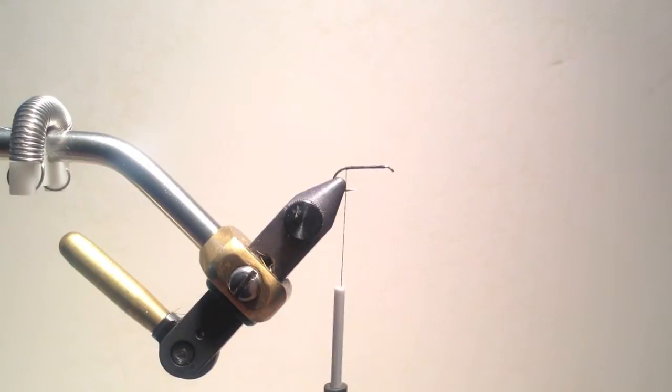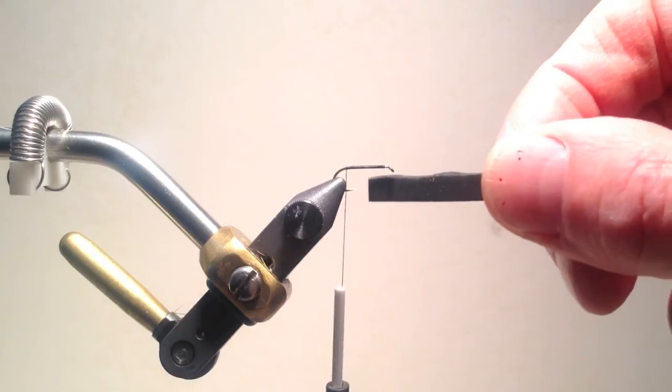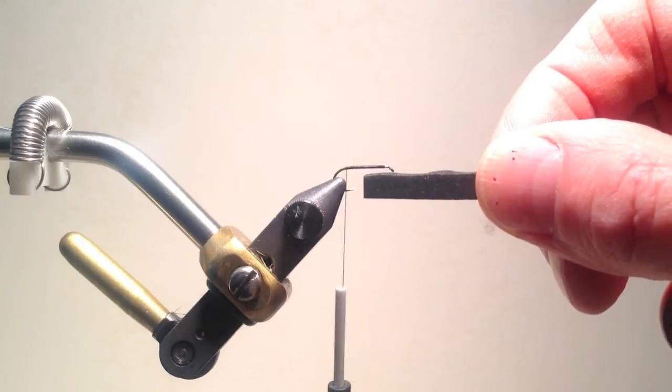Since I'll be tying a beetle, I happen to like black foam. I usually use the two millimeter, although I'm sure the three millimeter would be fine. I cut at the width of the hook gap, and then trim the foam so I have a point.